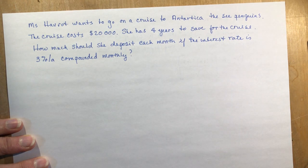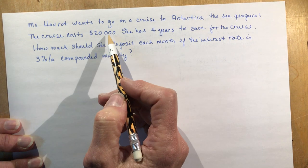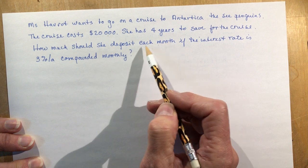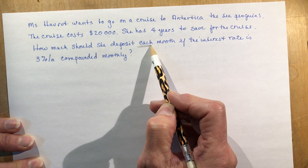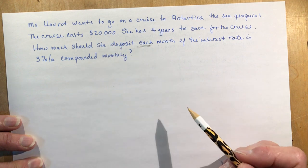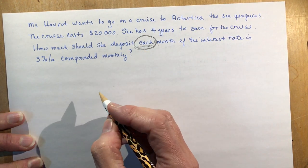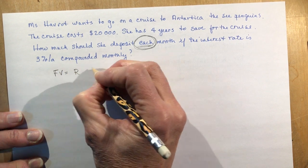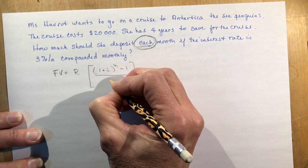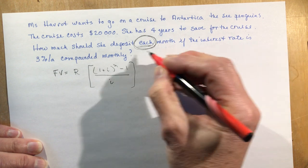Let's do a couple more examples. This one says, Miss Haverett wants to go on a cruise to Antarctica to see the penguins. This is a true story. The cruise costs $20,000. She has four years to save for the cruise. How much should she deposit each month? This word 'each' means an annuity. If I said, how much did she put in the bank today to have this amount? That would be the present value of a compounding interest question. But this is the key word here, each month, a regular payment.